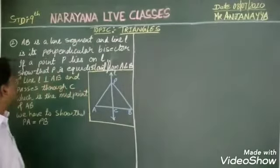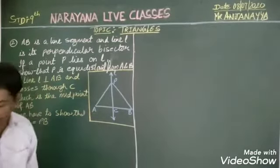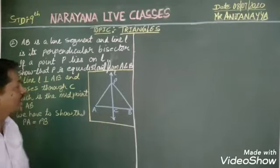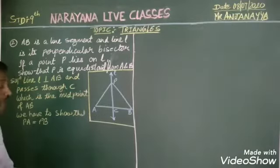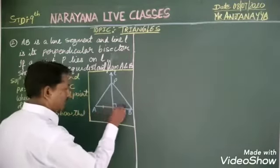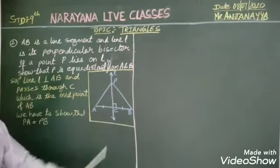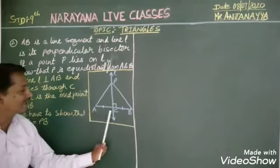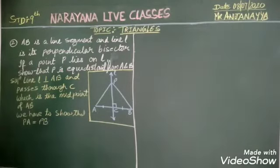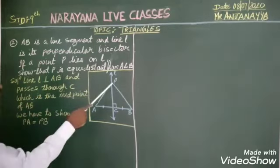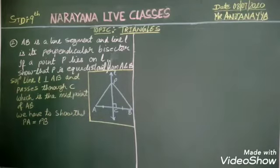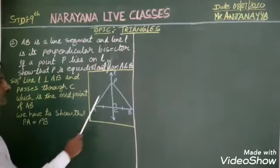Now coming to the second question. They have given AB is a line segment and line L is the perpendicular bisector of AB — it is perpendicular and it is bisecting, so AC is equal to BC. I have to prove that if a point P lies on L, then P is equidistant from A and B, i.e., PA is equal to PB.